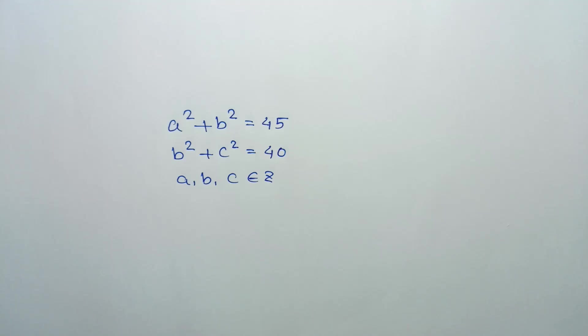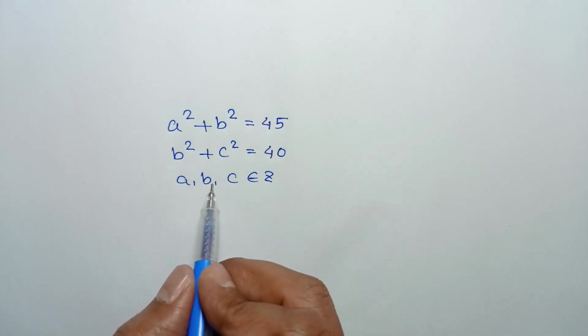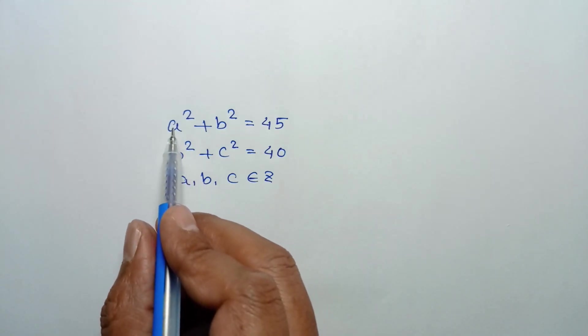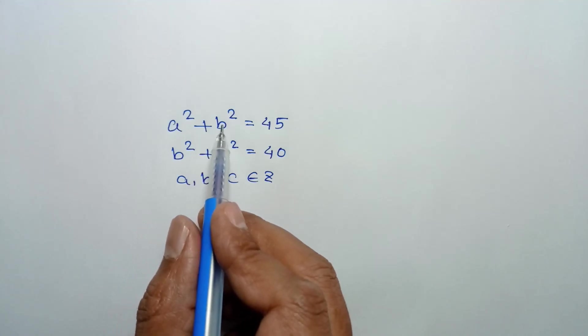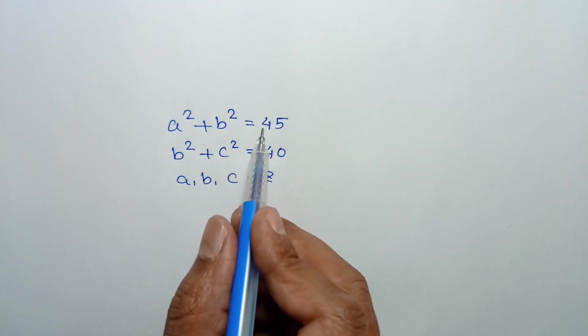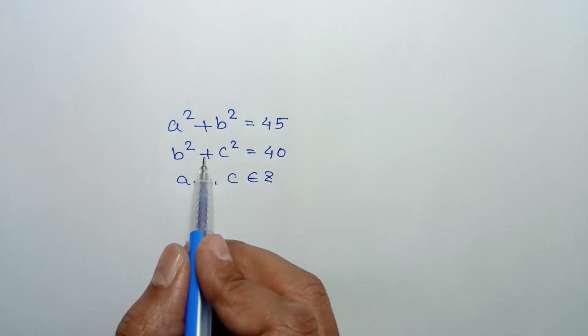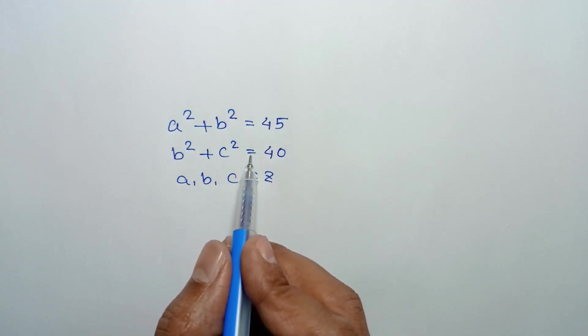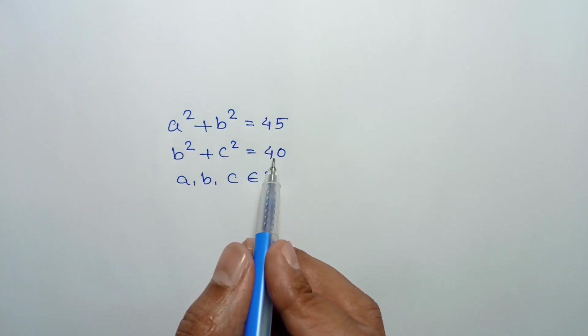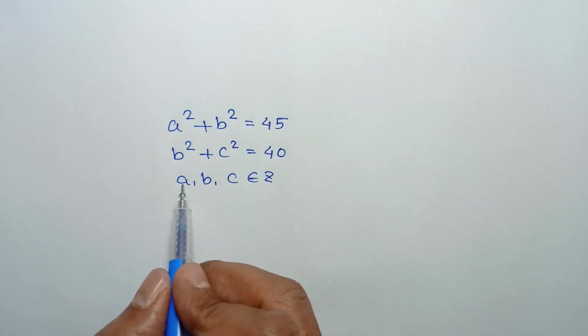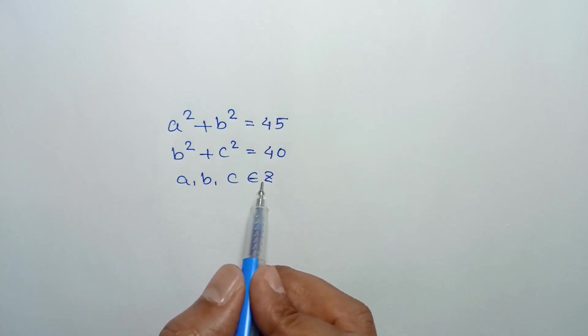Hi everyone. In this video I am going to show how to find the value of a, b, c where a squared plus b squared is equal to 45, b squared plus c squared is equal to 40, and a, b, c are integers.